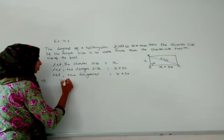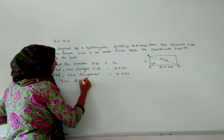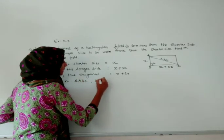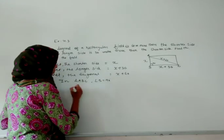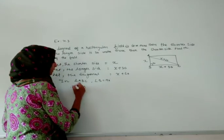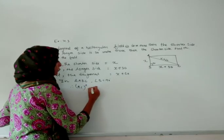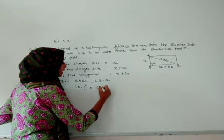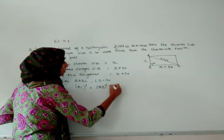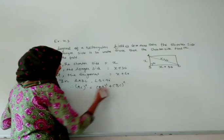Here we will apply Pythagoras law. In triangle ABC, angle B is equal to 90 degrees. Therefore we will apply Pythagoras law: hypotenuse squared equals base squared plus perpendicular squared.